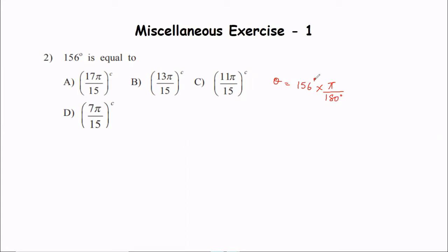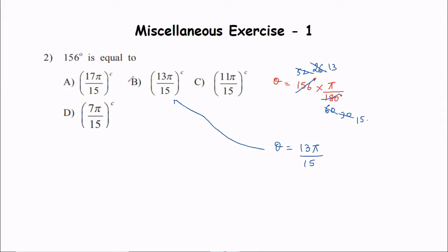Starting the cancellation: 156 and 180 divide by 3 to give 52 and 60. Then divide by 2: 26 and 30. Dividing further by 13 gives 2 over 15, so the answer is 13π/15 radians. Option B is the answer — mark it and note it down.